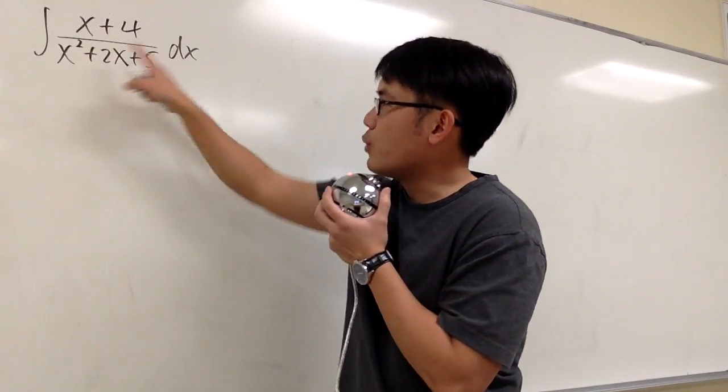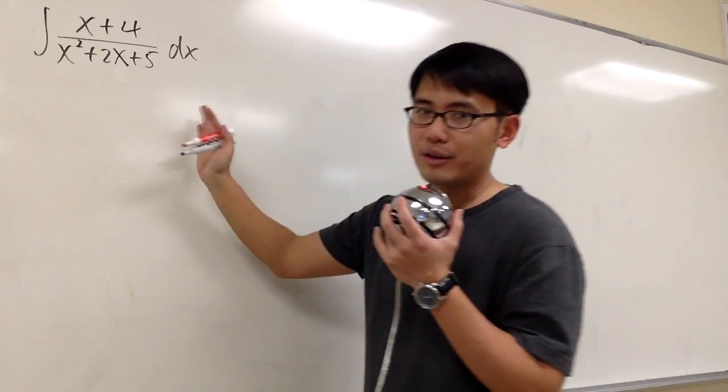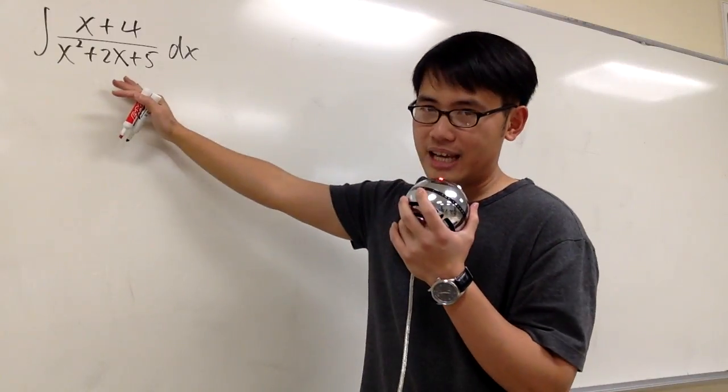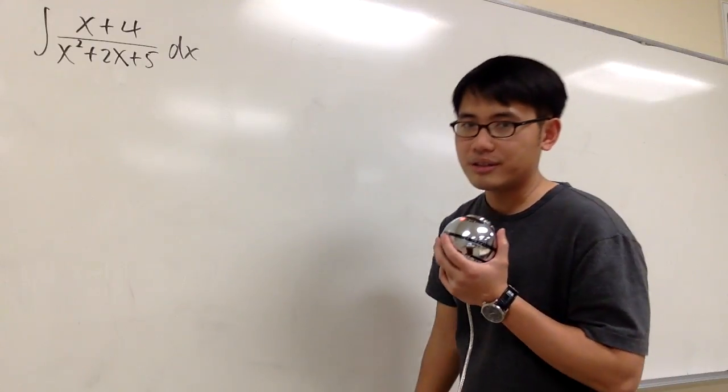So we are going to integrate x plus 4 over x squared plus 2x plus 5, and we should always try to factor out the denominator. In this case, we can't. Even worse, this quadratic expression has no real value solution.